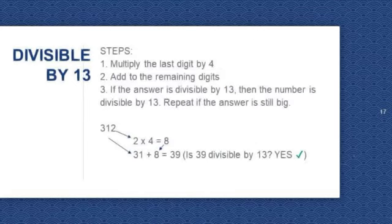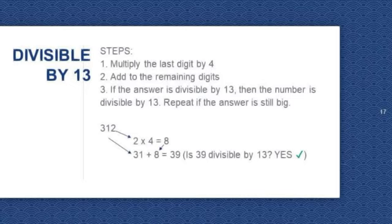Divisible by 13. We need to follow these steps. Step 1: multiply the last digit by 4. Step 2: add the result to the remaining digits. Step 3: if the answer is divisible by 13, then the number is divisible by 13. Repeat if the answer is still big.